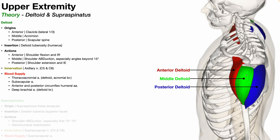The middle deltoid functions mainly in shoulder abduction. When the arm is resting by the side in anatomical position, that's zero degrees of shoulder abduction. At that point, if we start abducting the shoulder, the deltoid can function but has a poor mechanical advantage until about 15 degrees of shoulder abduction. Once you get past 15 degrees, the middle deltoid really starts contributing. Before 15 degrees, the supraspinatus plays a role.